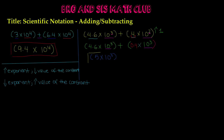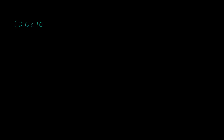This is how you add when you have different exponents in scientific notation. The same process applies to subtraction — but let's do an example just in case. Let's say we have 2.6 times 10 to the negative 1 power minus 1.4 times 10 to the negative 1 power.